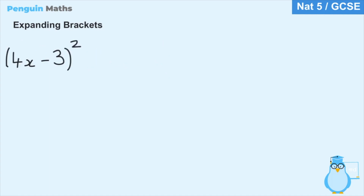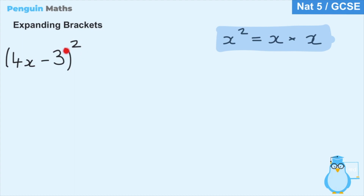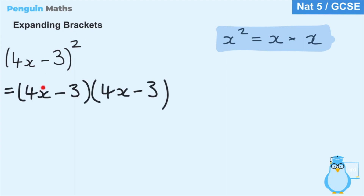Now let's look at this next example — what if we want to expand and simplify this expression? Here we have 4x minus 3 inside the brackets, and the whole thing is squared. The squared sign is outside the brackets, meaning everything within the bracket is squared. Just as x squared means x multiplied by x, this means we have 4x minus 3 in one bracket multiplied by 4x minus 3 in another bracket. Two brackets next to each other means they're being multiplied together.